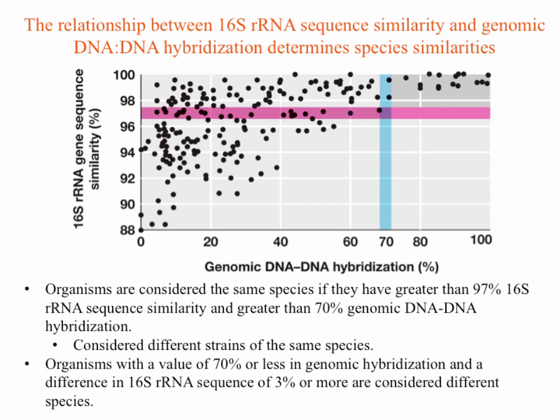When you look at a tiger and a lion, you know they're different species. Now, if we were to apply the same level of species definition to a lion and a tiger — basically saying that if you were to take lion DNA and hybridize it to tiger DNA, they will be more than 70% homologous, and because they also have more than 97% similarity in 16S RNA — by this measure, a lion and a tiger will come out to be the same species. So we cannot apply the same level of scrutiny that we do for microorganisms to higher organisms.